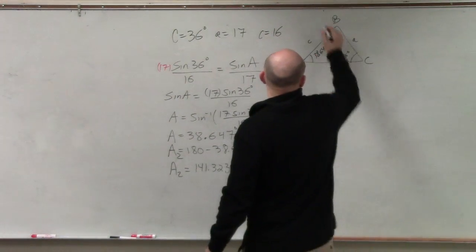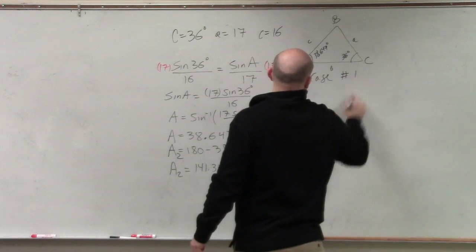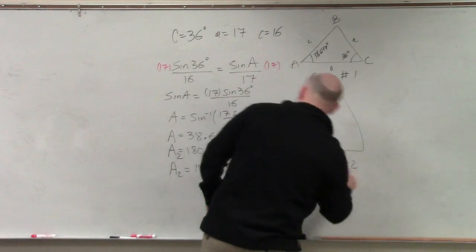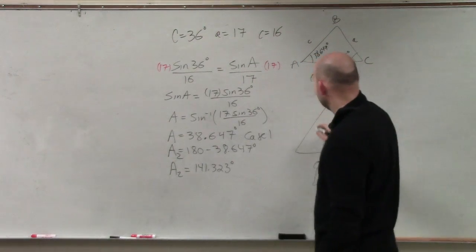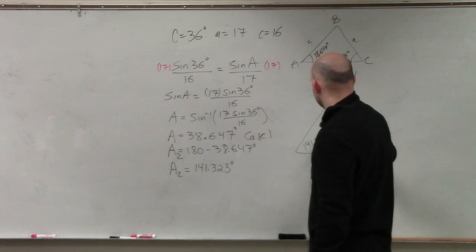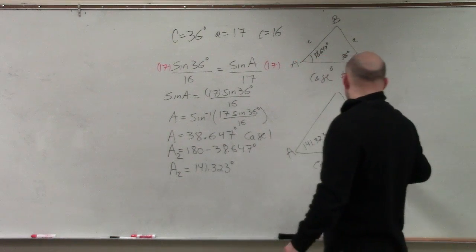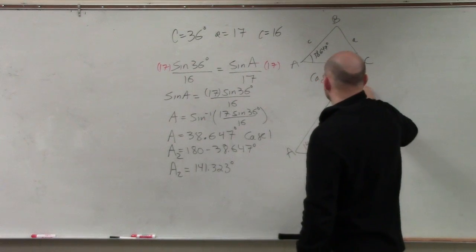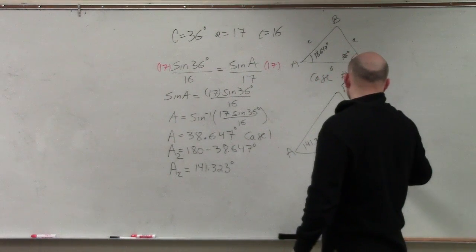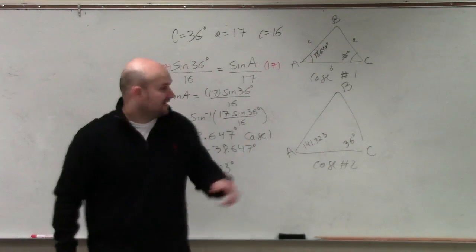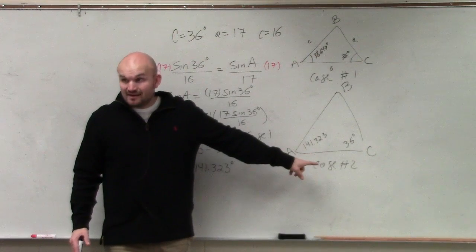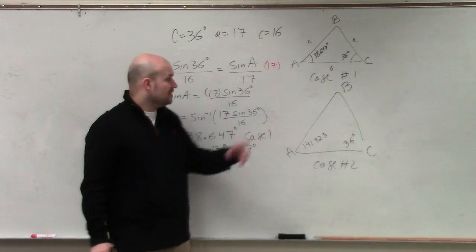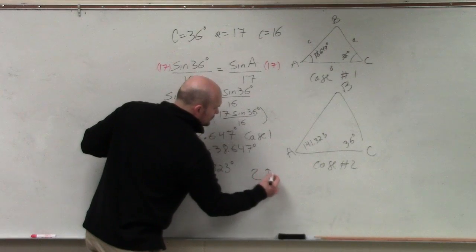Let's do case two. Case two, A2 is 141.323, and C is 36 degrees. Do I have enough room? Can I still find an angle B here? Yeah, there's enough room, isn't there? Would you guys agree? Yes? So therefore, this problem has two triangles.